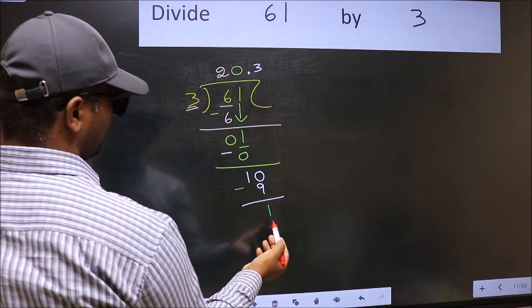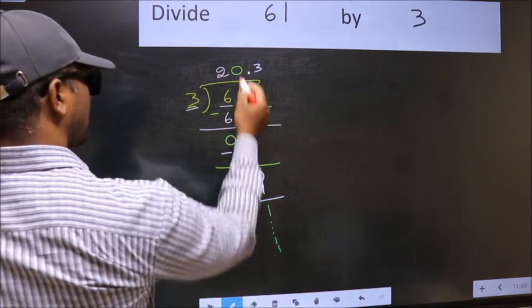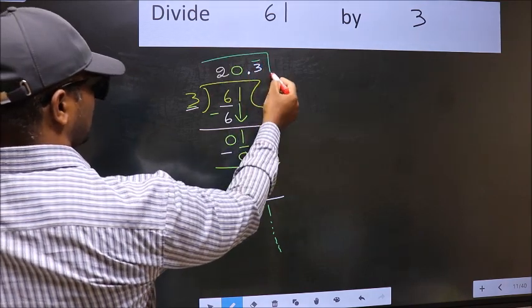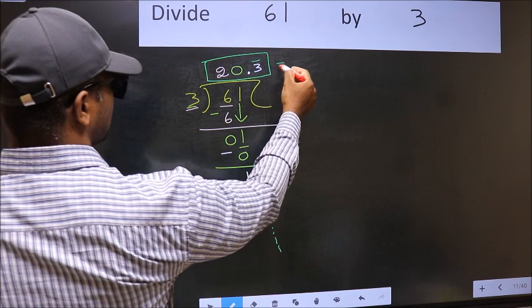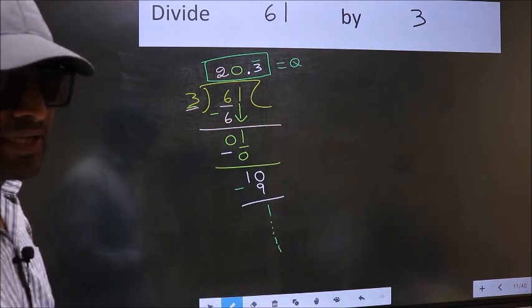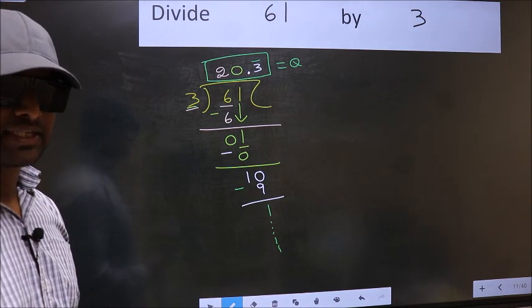We got 1 again, so the division continues. And we put a bar on this number 3. So this is our quotient. Did you understand where the mistake happens? So you should not do that mistake.